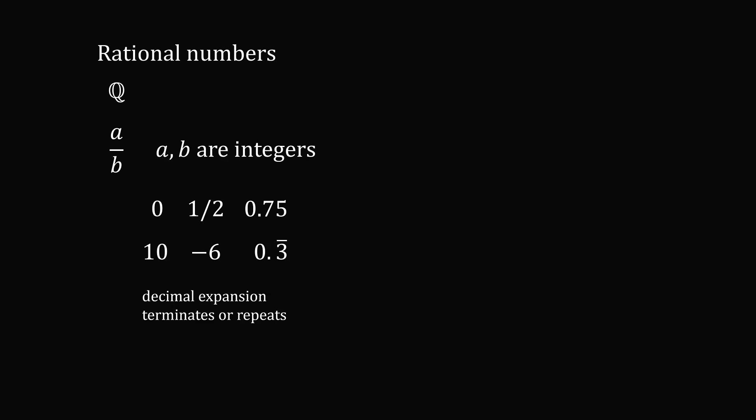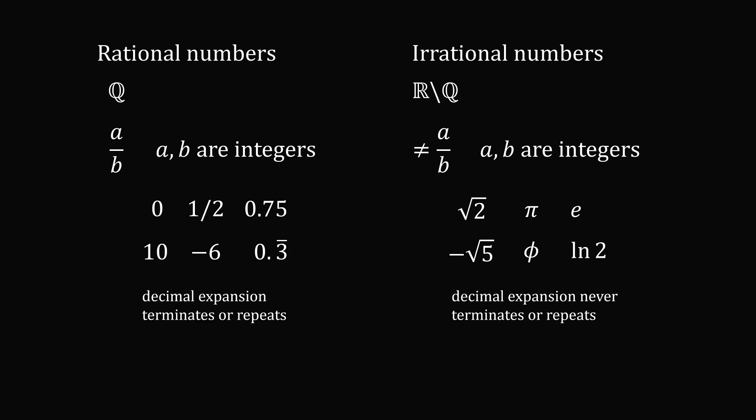So, this then brings us to irrational numbers, which are denoted by the real numbers minus the rational numbers. These are numbers that cannot be written as A over B, where A and B are integers. Common irrational numbers are the square root of 2, pi, e, negative square root of 5, the golden ratio, or the natural logarithm of 2. In these numbers, the decimal expansion never terminates or has any repeating pattern.